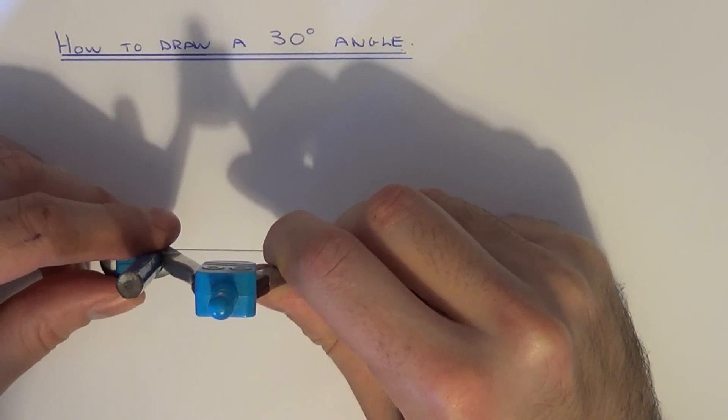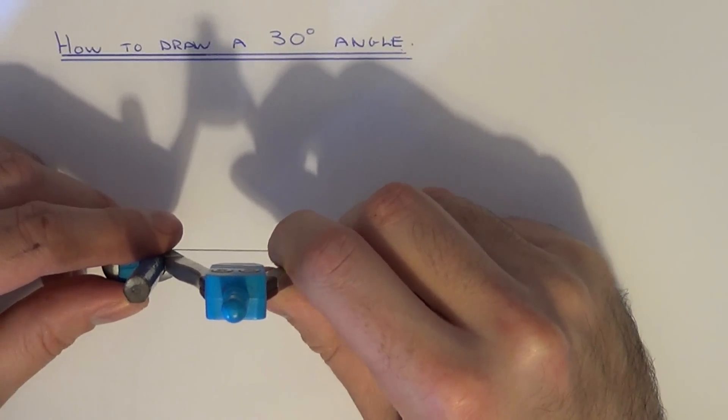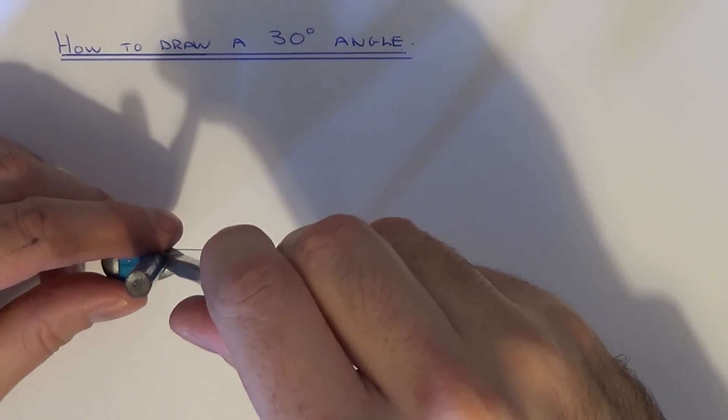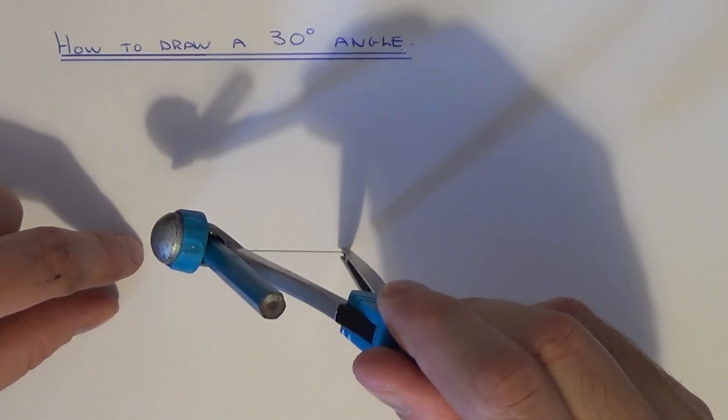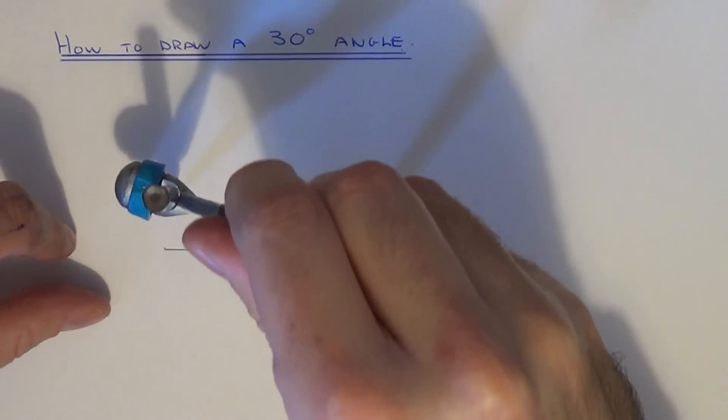So to get your 60 degree angle, open your compass to the full length of the given line and do two arcs either side of your line.